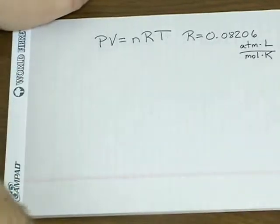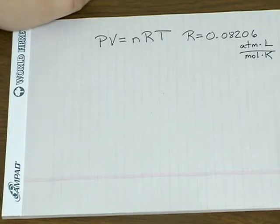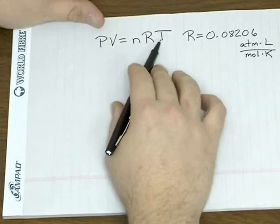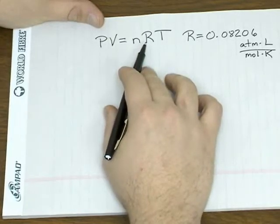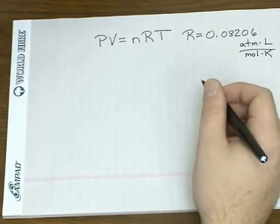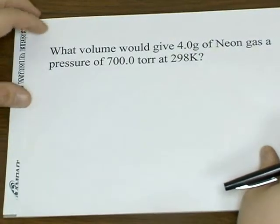There are a couple of different main ways you can use the ideal gas law. One way is you just use it as given. You've got four variables here plus your constant. If you know three of the four, you can use this equation to solve for the fourth.